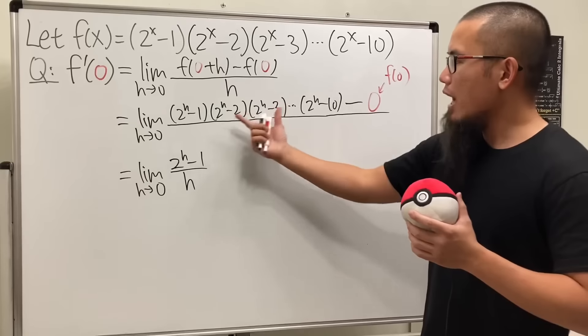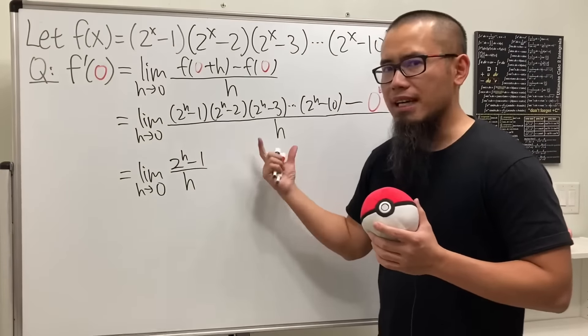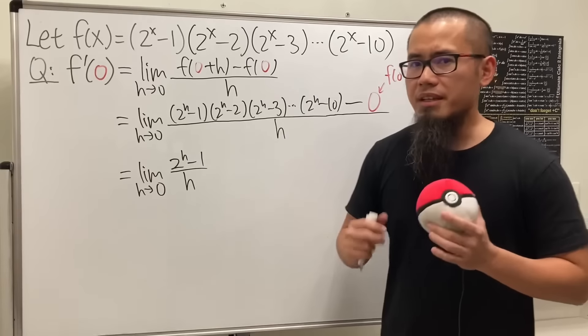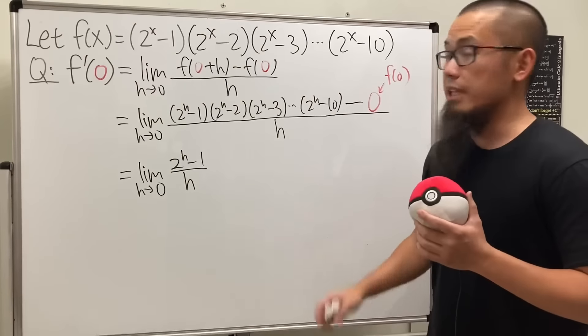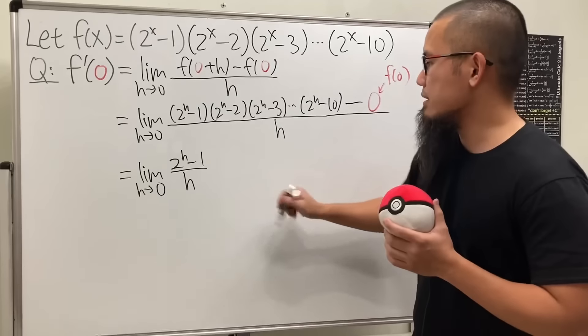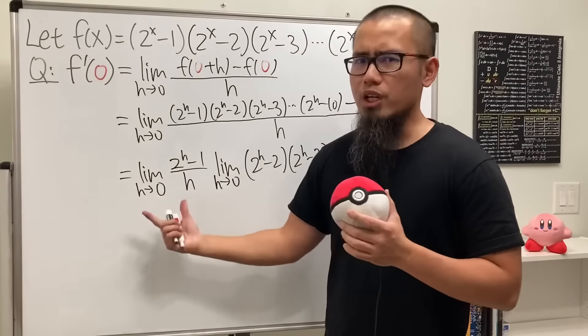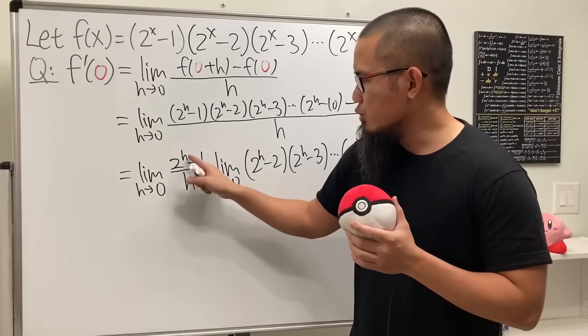Remember, the limit of a product is the product of the limit under the condition that the limits all exist. They do all exist, so I'm just going to write down this and then the rest.